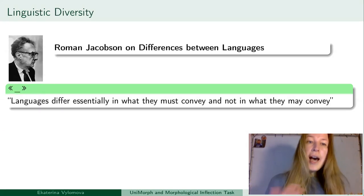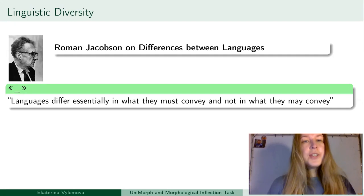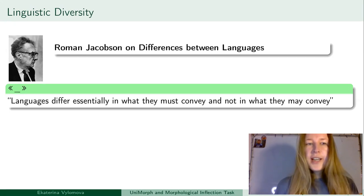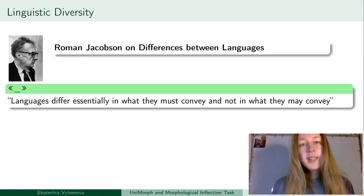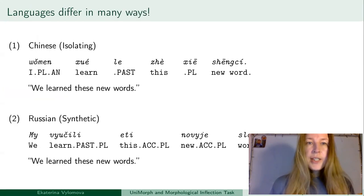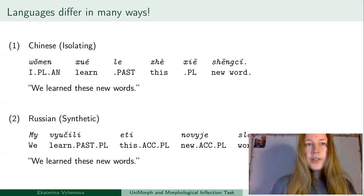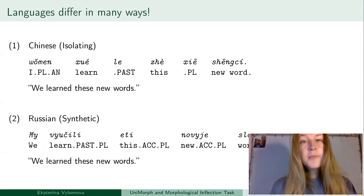On the other hand, languages are very different. I would like to recall the famous quote from Roman Jakobson who said that languages differ essentially in what they must convey, not in what they may convey. I would like to provide some examples of how languages can use different instruments to express the same meanings.